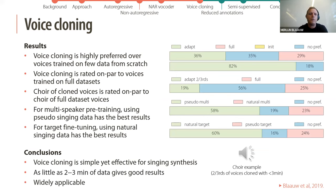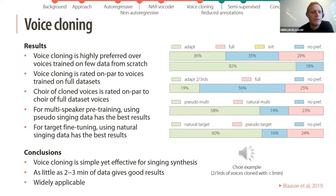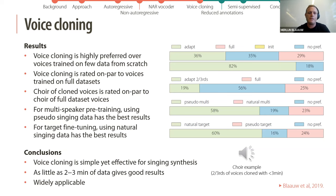The results show that voice cloning is highly preferred over voices trained on few data from scratch, voice cloning is rated on par with voices trained on full datasets, and a choir of cloned voices is rated on par with a choir of full-dataset voices. For multi-speaker pre-training, pseudo-singing gives the best results — likely because it has very consistent pronunciation. For fine-tuning, natural singing gives the best results, as it is closer to the target.